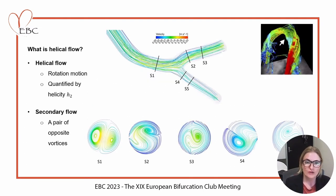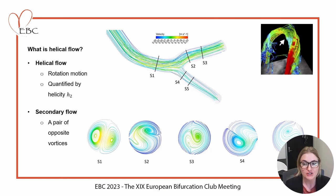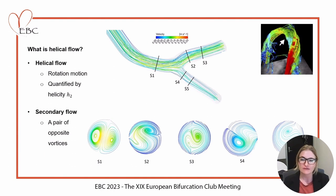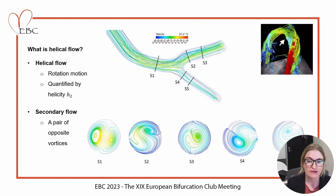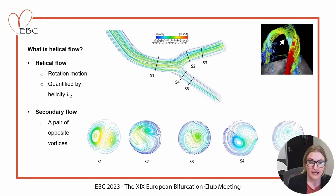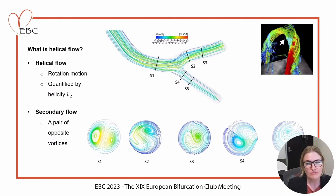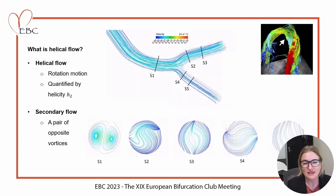We all have heard of wall shear stress, which is a luminal surface measure of the blood flow-induced shear stresses on the endothelium. However, what is helical flow exactly? Helical flow is still derived from the blood flow itself. It's a volume measure, unlike wall shear stress, and it describes the rotational motion within the bifurcation.